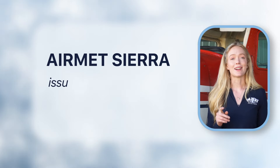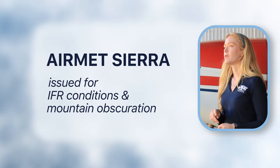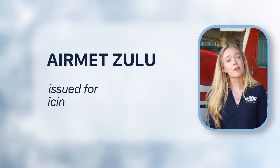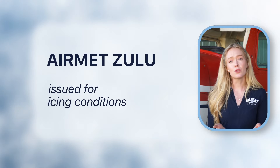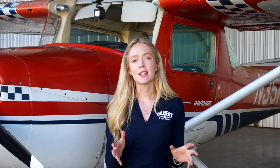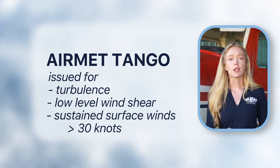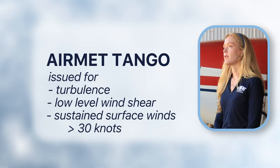There are three main types of AIRMETs. The first is AIRMET Sierra — I remember this because you cannot see. AIRMET Sierras are issued for IFR conditions and mountain obscuration. Next are AIRMET Zulus, issued for icing conditions — I remember this because AIRMET Zulu is for freezing. Icing conditions are where there is visible moisture and temperatures near or below freezing. We also have AIRMET Tangos, issued for turbulence both low and high, low-level wind shear, and sustained surface winds of 30 knots or greater.